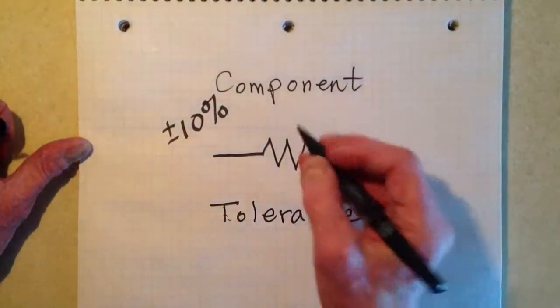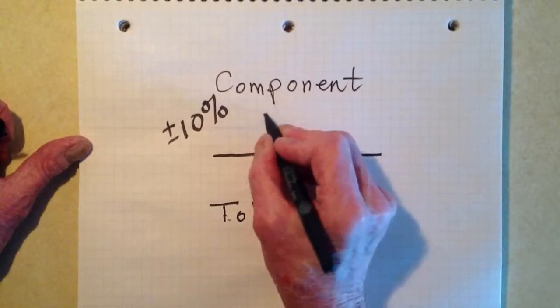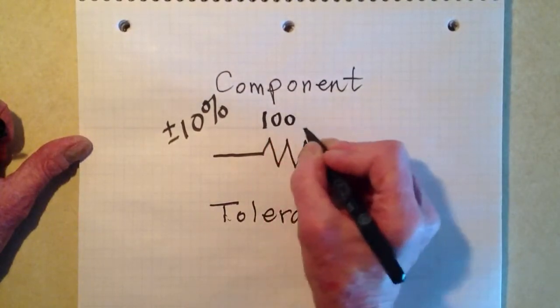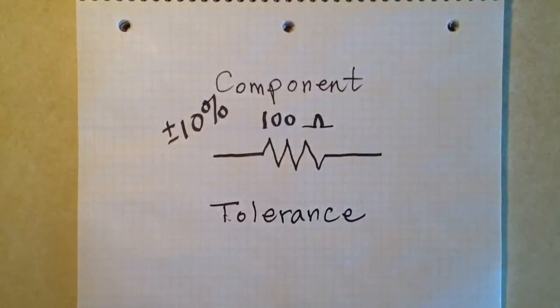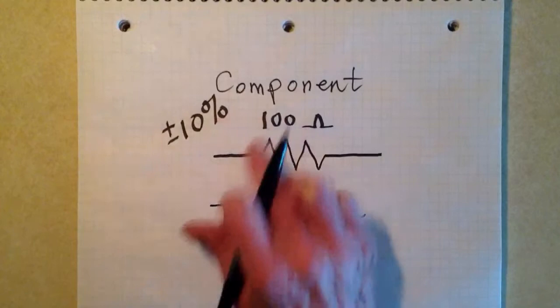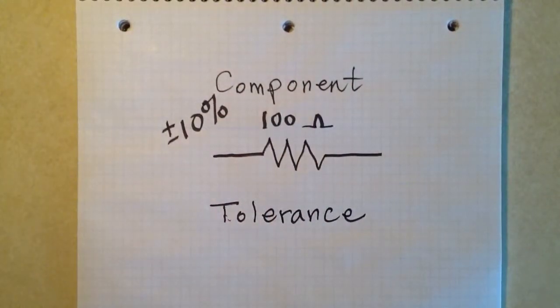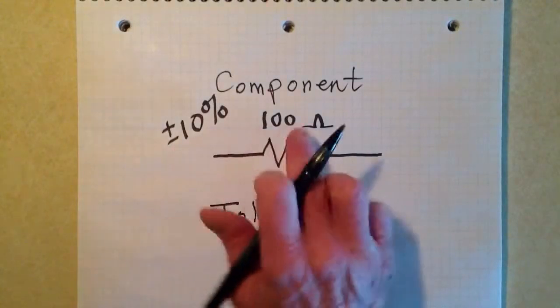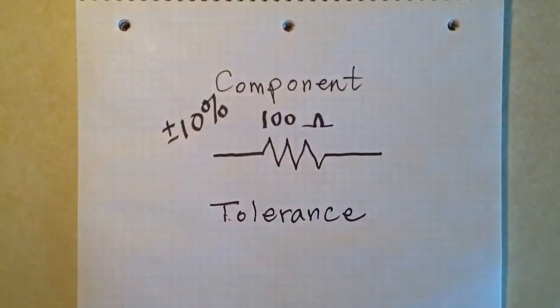So, suppose you go into your Radio Shack store where they still have electronic components like resistors and capacitors. Heaven bless them. 100 ohms is what you're looking for and it turns out to be plus or minus 10% tolerance. What does that mean exactly? Plus or minus 10% of what?